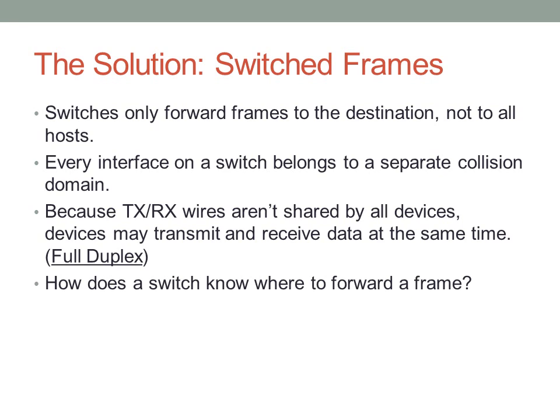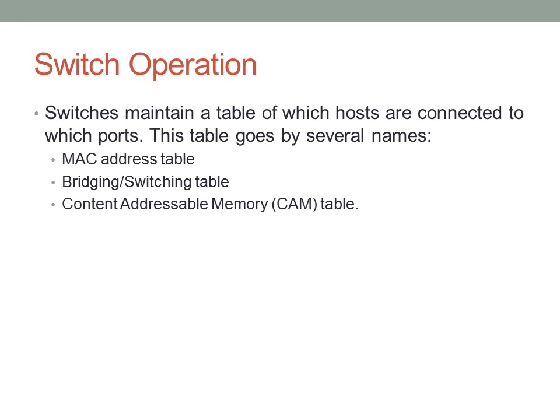How does a switch know where to forward a frame? How do switches know which devices are connected to which interfaces? Switches maintain a table of which hosts are connected to which ports — this table is called a MAC address table. Sometimes you'll hear it referred to as a bridging or switching table, or possibly a CAM table. CAM is short for content addressable memory, which is the type of memory used by this sort of table.